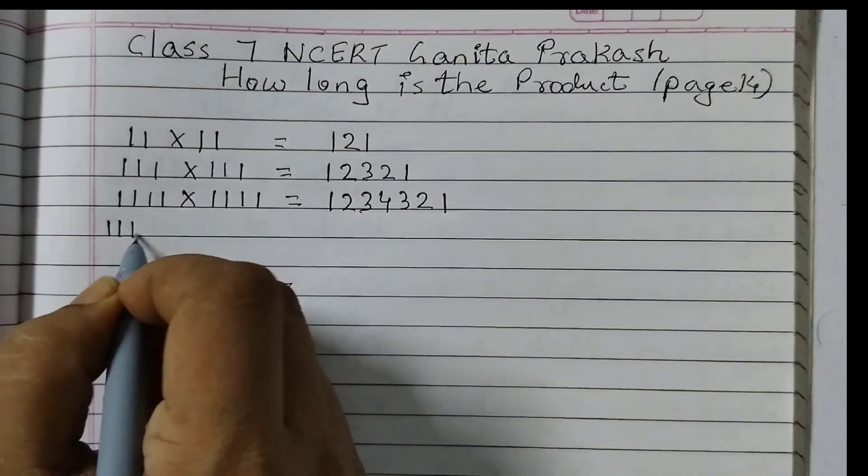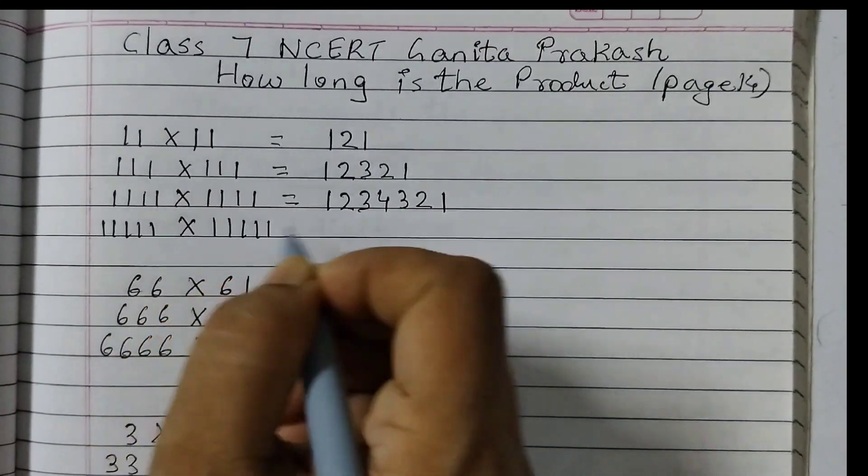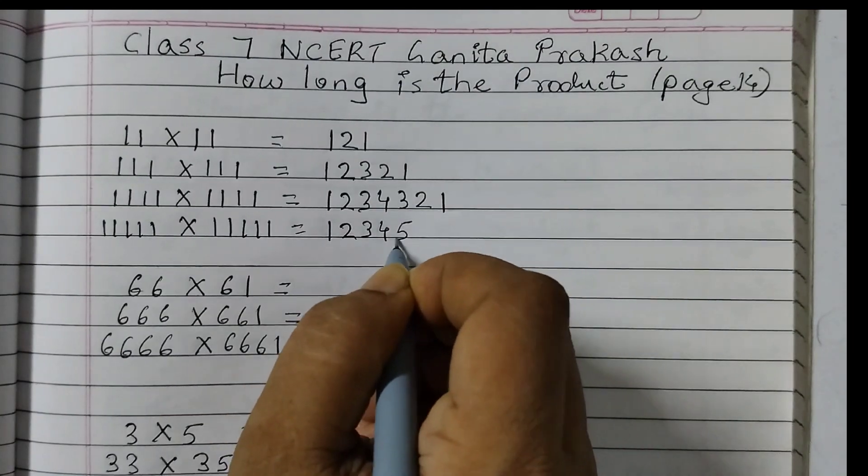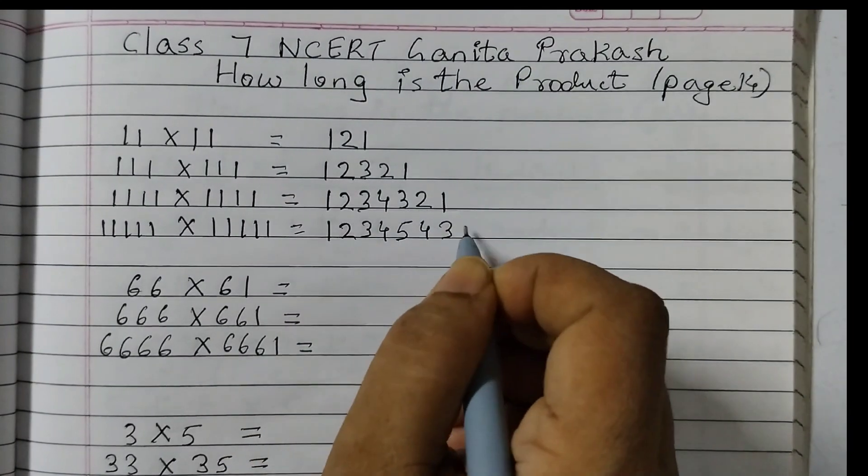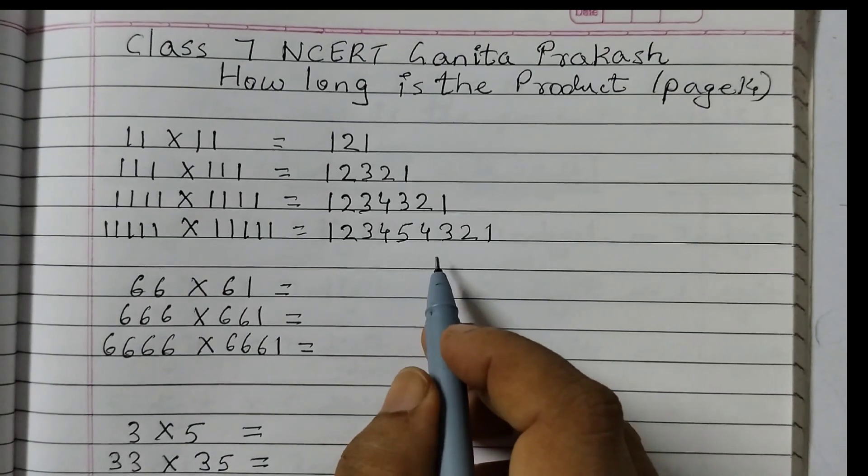If I have 1, 2, 3, 4, 5. Five ones. So then I will start from 1, 2, 3, 4, 5, 4, 3, 2, 1. Okay? So this is how you need to do it.